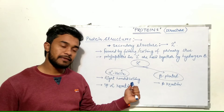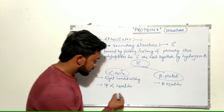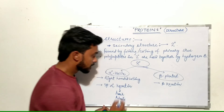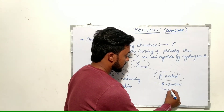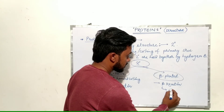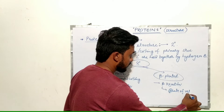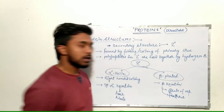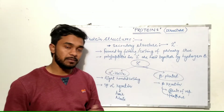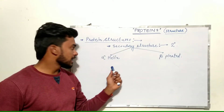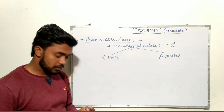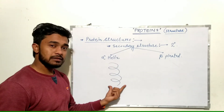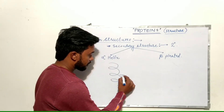Alpha helix coiling is in the right-handed fashion, and an example is alpha keratin, which is found in hair and nails of mammals. Beta keratin is found in scales of reptiles and feathers of birds. Alpha helix structures are formed in the right-handed fashion with a pitch of 5.4 angstroms.